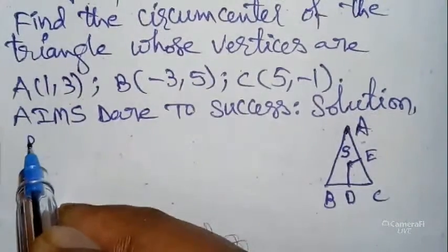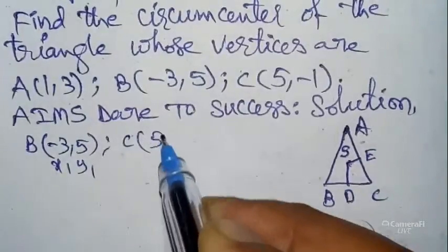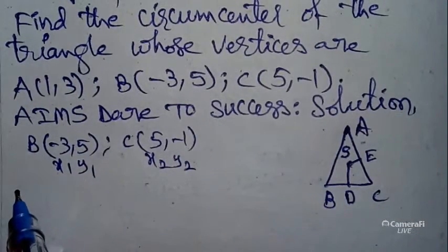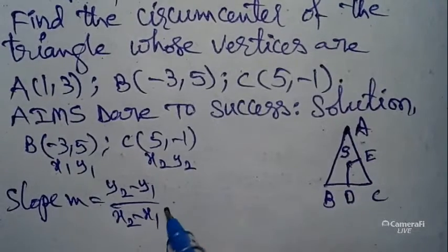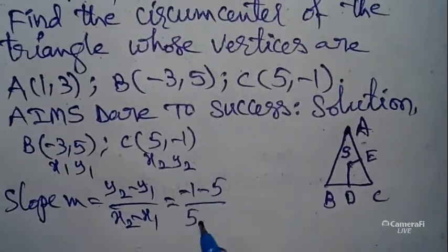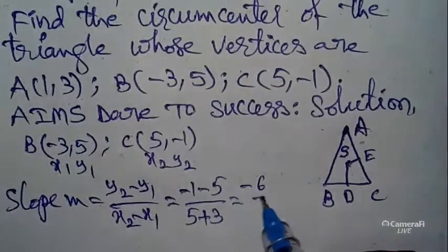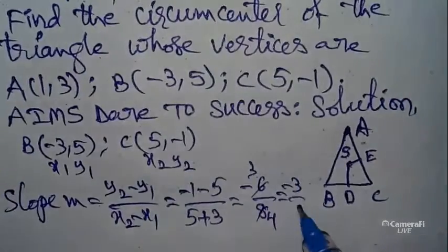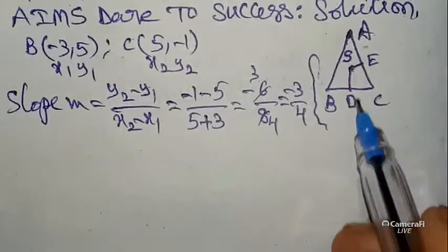For side BC, B is (-3, 5) — let it be (x1, y1) — and C is (5, -1) — let it be (x2, y2). Slope m equals (y2 - y1) / (x2 - x1) = (-1 - 5) / (5 - (-3)) = -6 / 8 = -3/4.